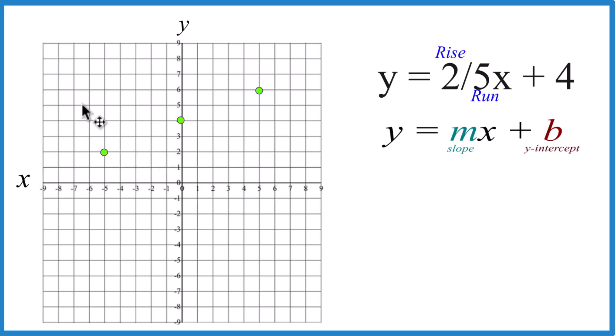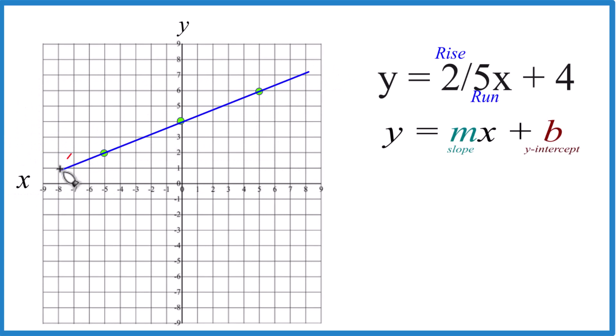So there's the graph for y equals two-fifths x plus four. Let's put a line through that, then we'll put arrows there, show this goes to infinity, and we have graphed y equals two-fifths x plus four using slope-intercept form.